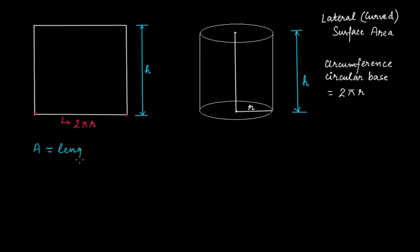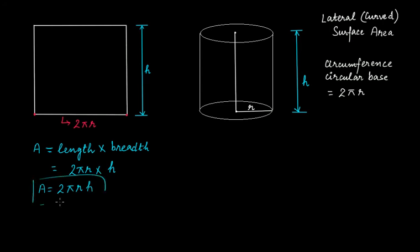What will be the area of this rectangular sheet? The area of a rectangle is length multiplied by breadth. The length is 2πr and the breadth is h. Therefore the area in this case is 2πrh. The area of this rectangular sheet is actually the lateral or curved surface area of this cylinder. When we cut it open and it takes the shape of a rectangular sheet, the area of this rectangular sheet is the lateral or curved surface area of this cylinder.